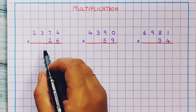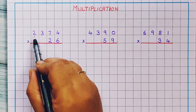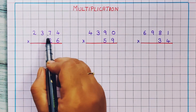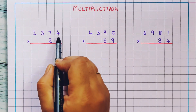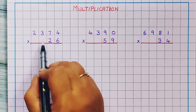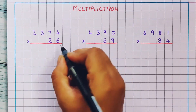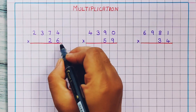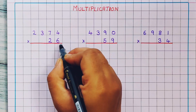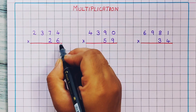Now let's see the first problem: 2,374 into 26. First, what we are going to do? We are going to start the multiplication with the units digit number, that is 6.